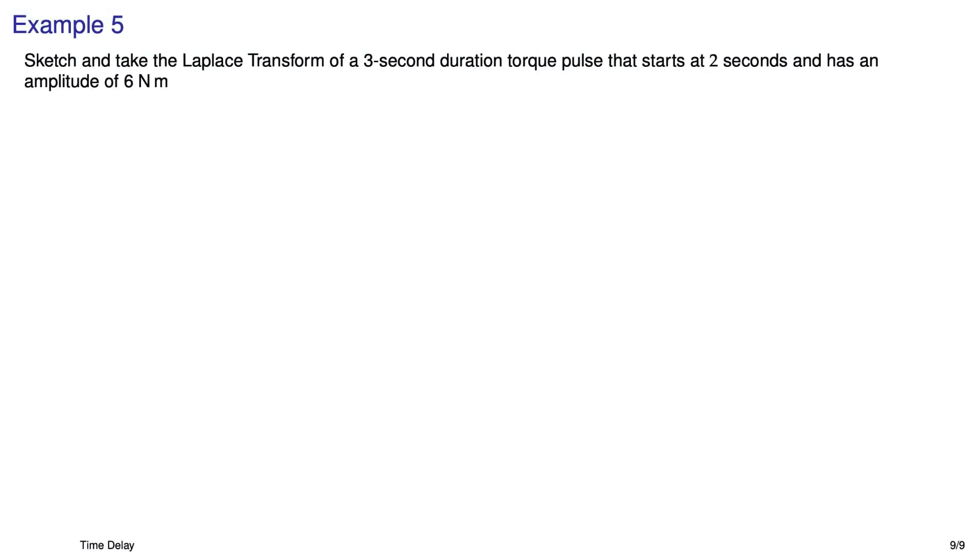And the last example. Here we're going to make a pulse function that has amplitude of six newton meters. It's a torque, I guess. It's going to start at two seconds and have a duration of three seconds. So there is our lovely pulse.